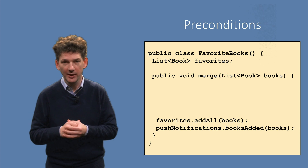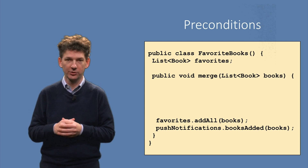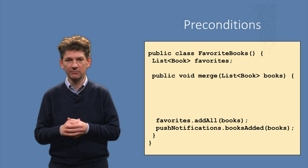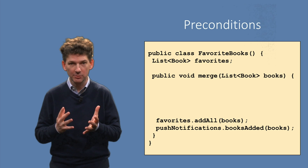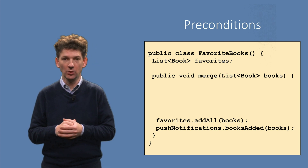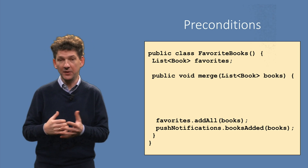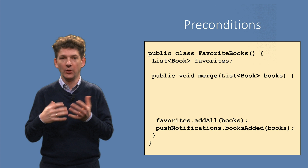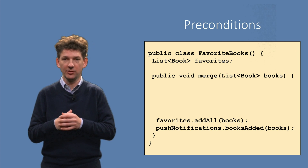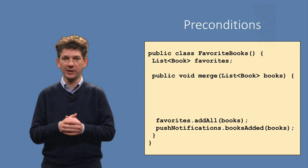Let's first look at the method's parameter, called books, which is just a list of books. Can we pass any book list into this method? Can the book list be null? No, it cannot. The add-all method used will throw a null pointer exception if its argument is null. Thus, our implicit assumption is that the book list is not null. Let's add this as an explicit assertion.